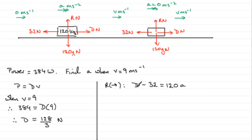But we now know that D equals 128 over 3, so if we call this equation 1 and we call this equation 2, we just simply sub 1 into 2. Doing that gives us 128 over 3 minus 32 equals 120A.